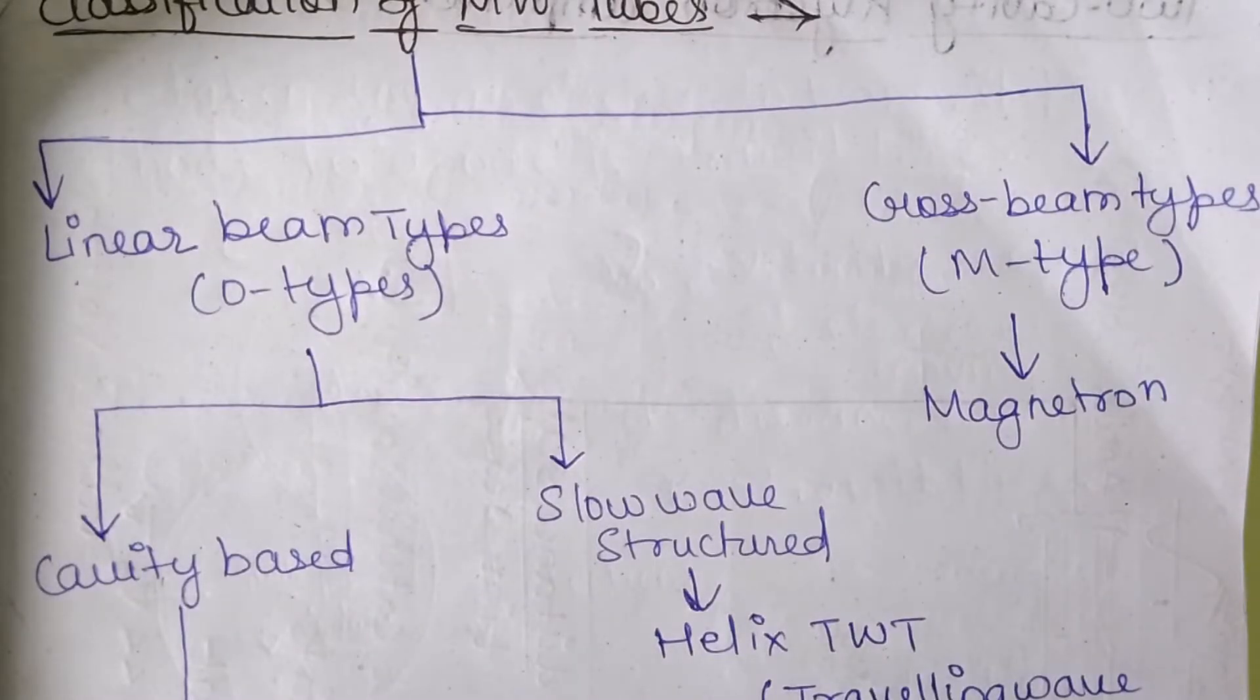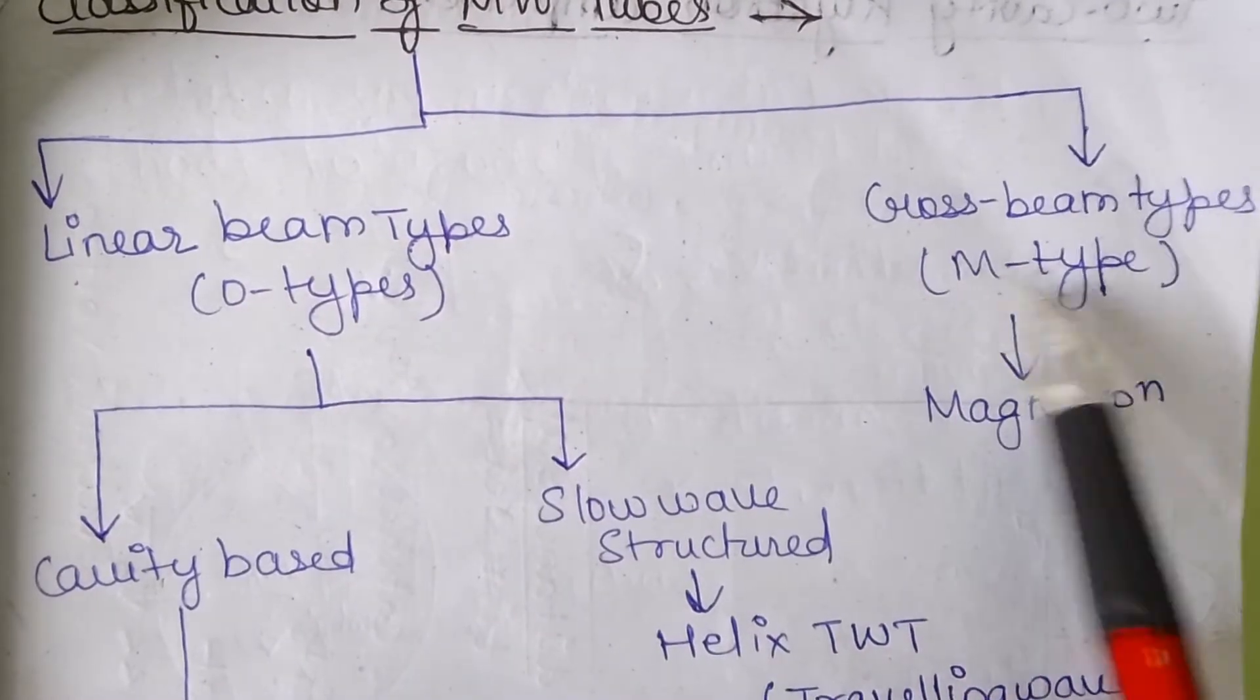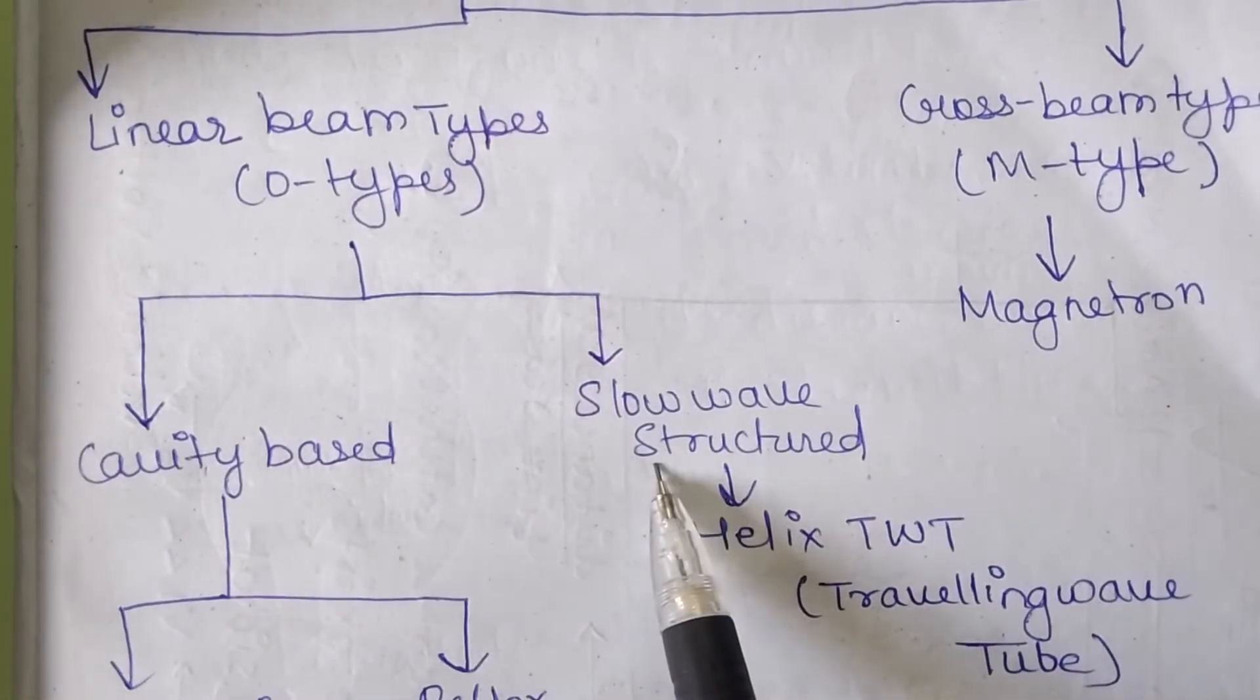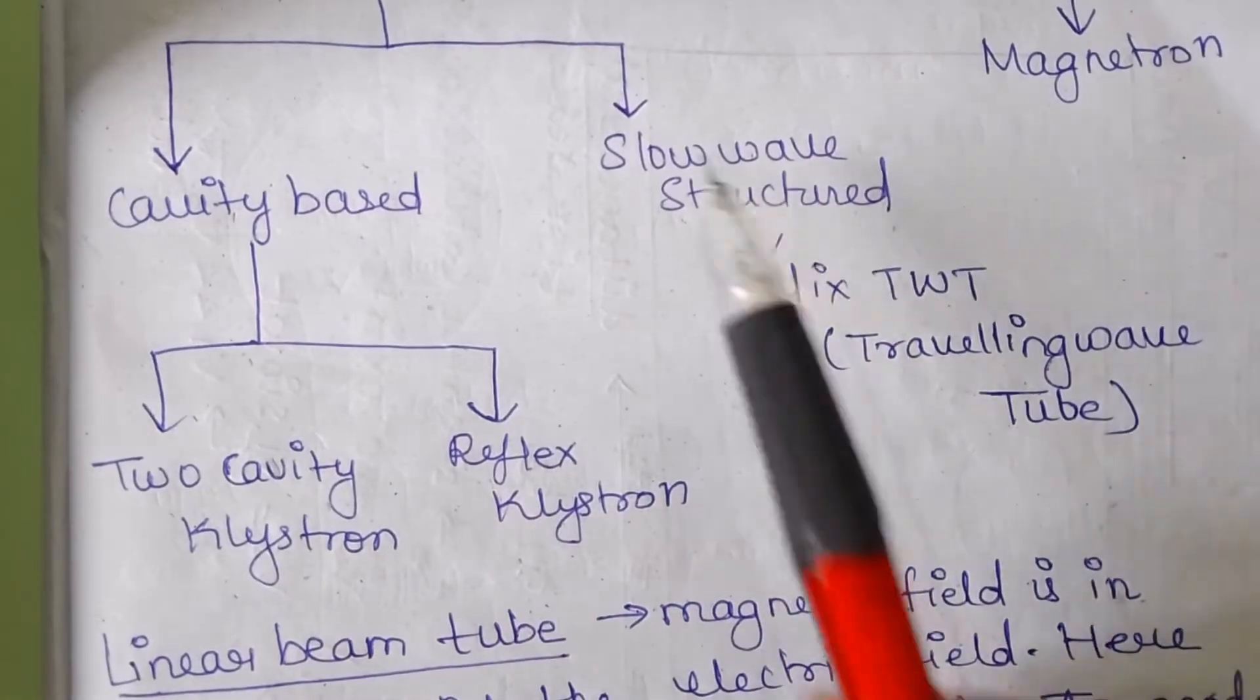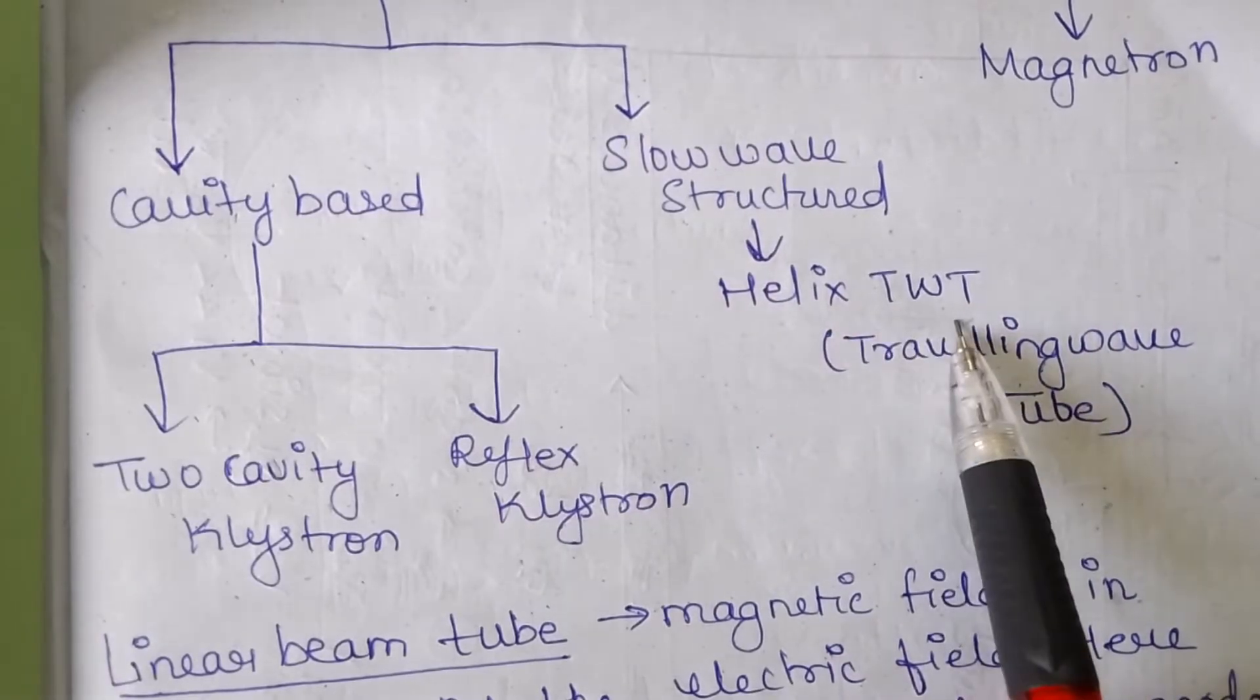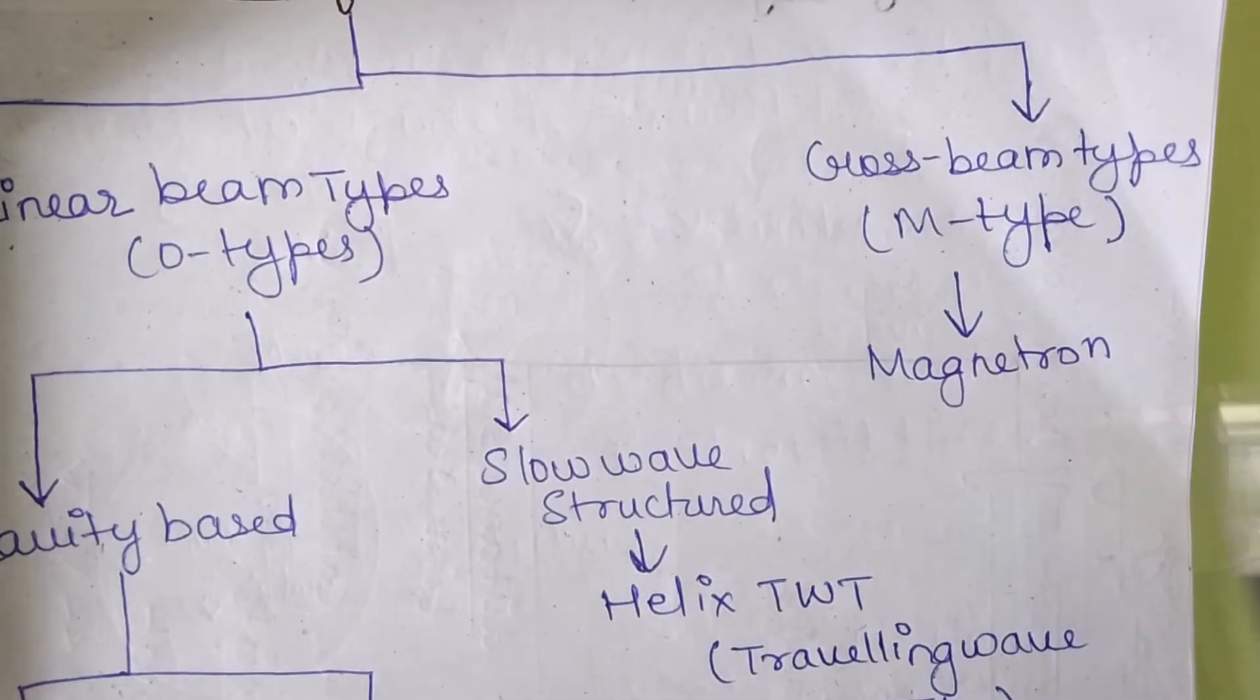Now, the next topic is regarding the classification of microwave tubes. The microwave tubes are mainly divided into two types: the linear beam type or the O-type and cross beam type or the M-type. Again, these are subdivided as the cavity based and slow wave structured. The cavity based is classified into two types: the two cavity klystron and the reflex klystron. The slow wave structured is classified into helix TWT, which represents the travelling wave tube. The cross beam type or the M-type is classified into the magnetron.